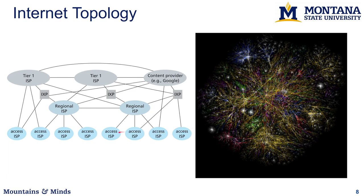Organizationally, there are regional or access ISPs — maybe this is Montana State — which have links to a regional ISP providing connectivity to other regional ISPs, internet exchange points where organizations have routers and networks, and direct links to tier-one or tier-two ISPs. Routing finds a path through this network to get packets from one access ISP to another.